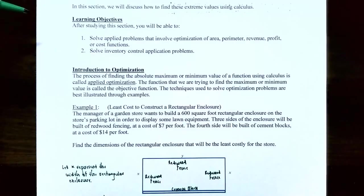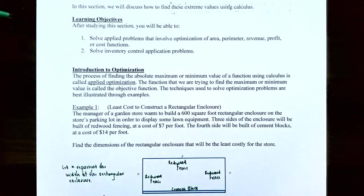In this video we're going to talk about how to solve applied problems that involve optimization of area and perimeter. In the next video we'll talk about how to solve applied problems involving revenue, profit, and cost functions. The process of finding the absolute maximum or absolute minimum value of a function using calculus is called optimization or applied optimization.